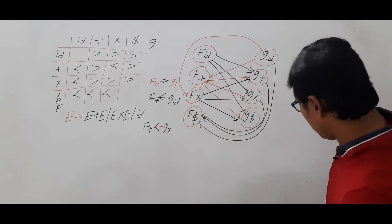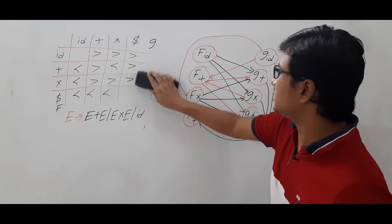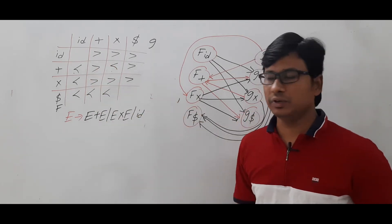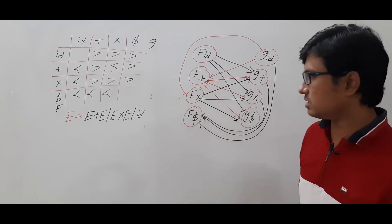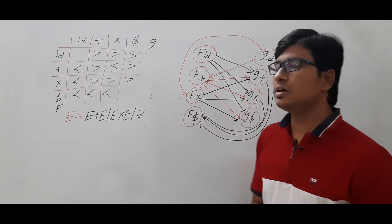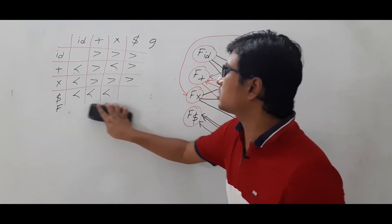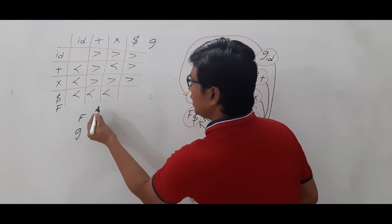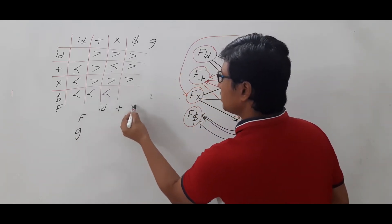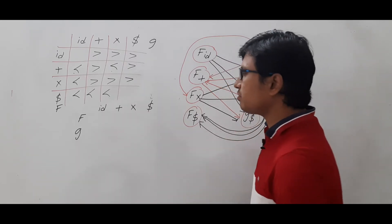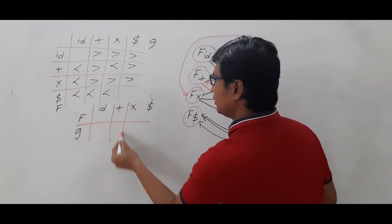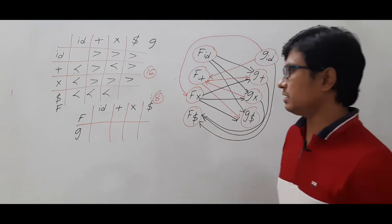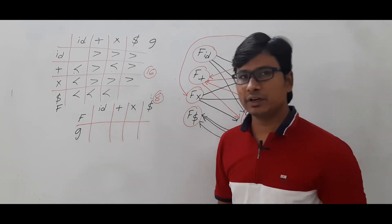We have taken the relational table and converted it into a graph. After constructing the graph, we need to check whether any cycles exist. If there are cycles, we cannot construct the functional table for this relational table. We will not have any cycles here. Once confirmed, we can start computing the functional table, which has 8 entries compared to 16 in the relational table.